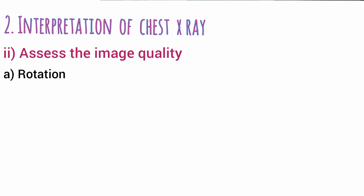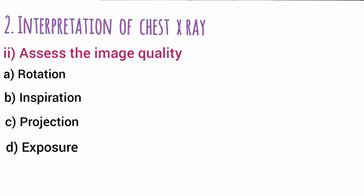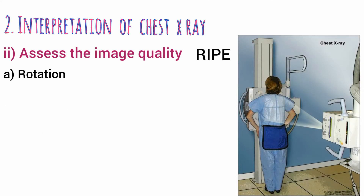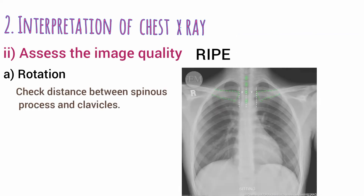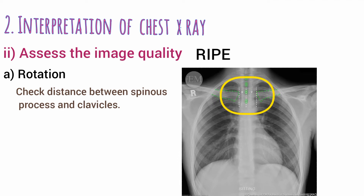The next step is to assess image quality. Consider four things: rotation, inspiration, projection, and exposure — the mnemonic RIPE. For rotation, ensure the patient is standing straight and not rotated to either side, as rotation can produce errors. Check the distance between the spinous processes and the clavicles on each side — if this distance is increased on one side, the patient is rotated to that side.